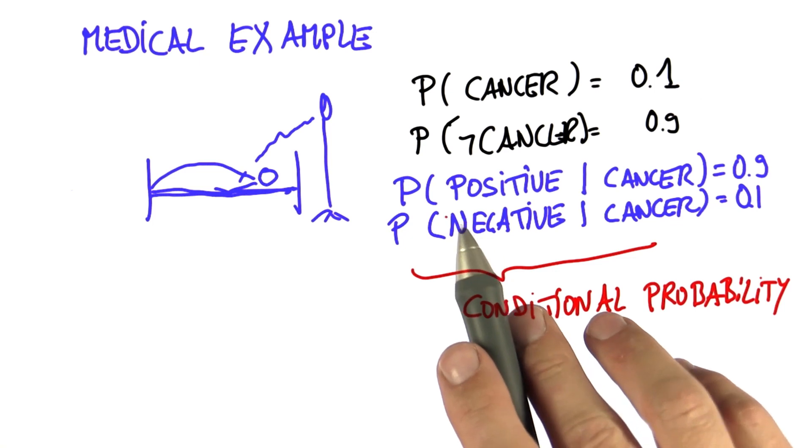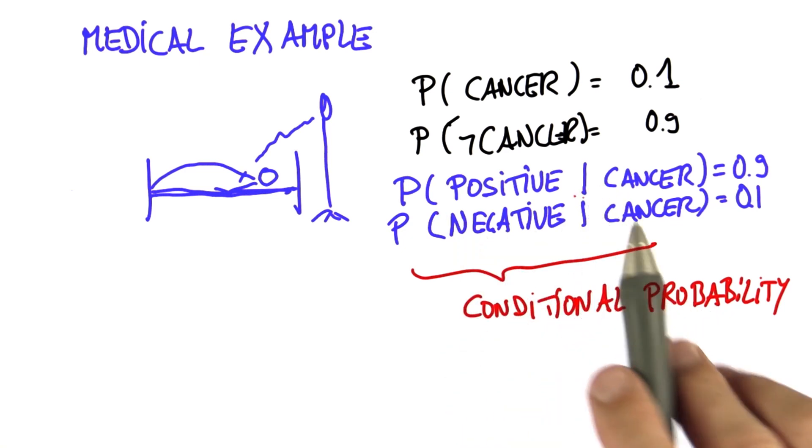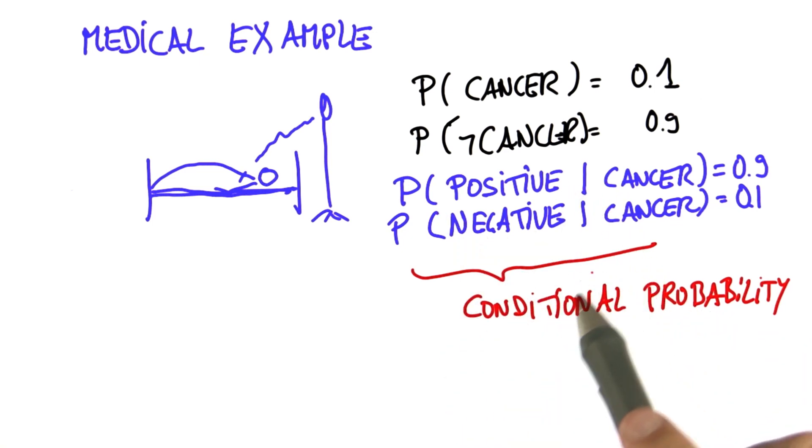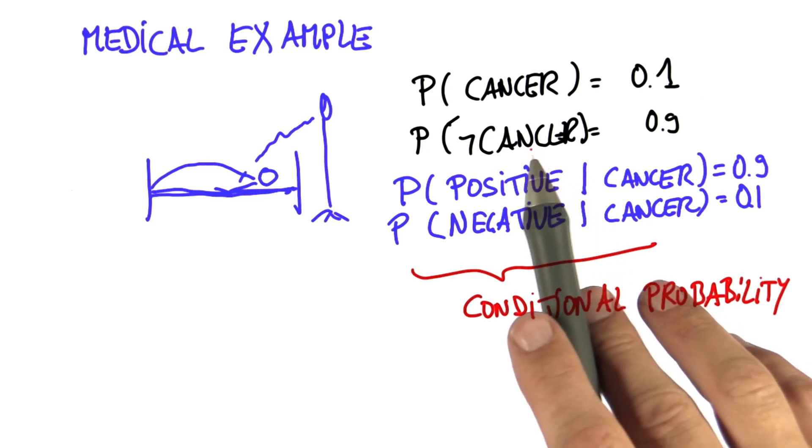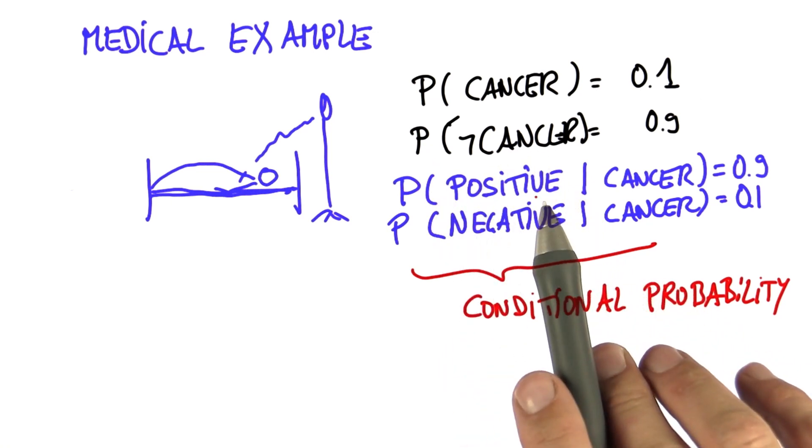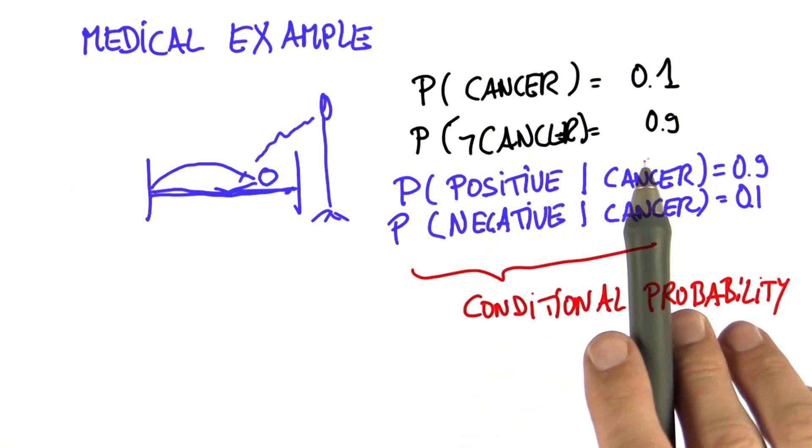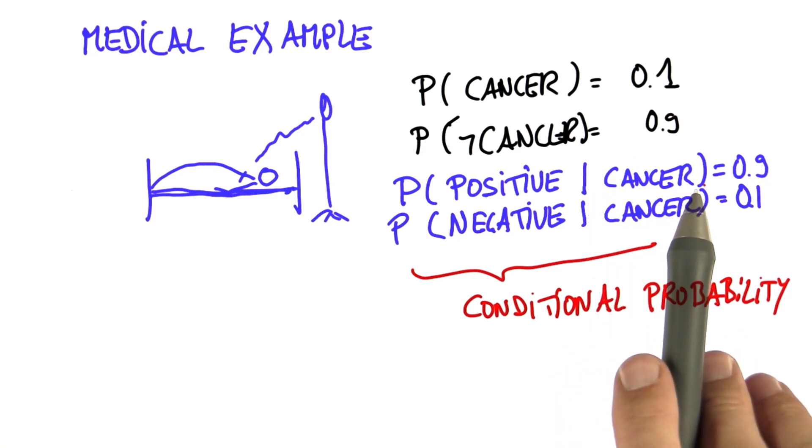And the way to understand this is this very funny notation. There's a bar in the middle. And the bar says, what's the probability of the stuff on the left, given that we assume the stuff on the right is actually the case.